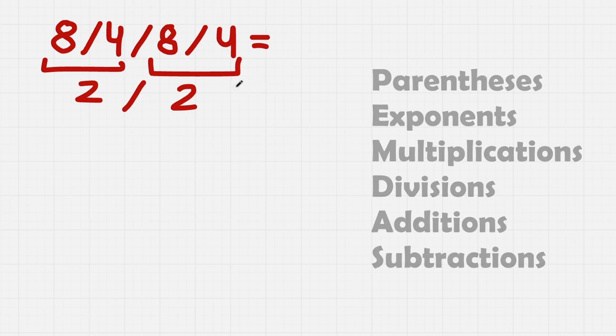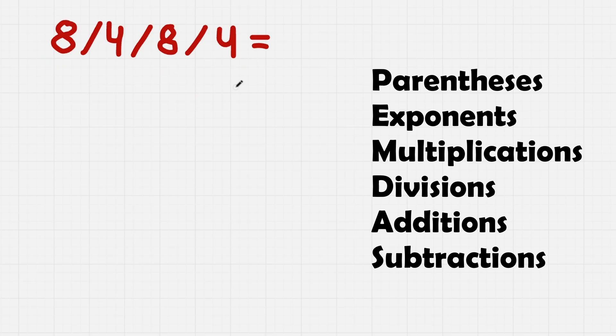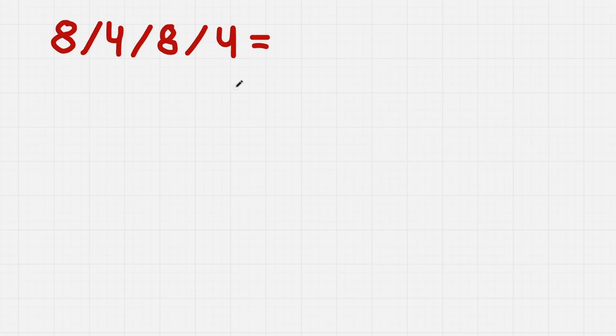And that is not correct according to the PEMDAS rule that says we need to do the left operations first if we only have one type of operation. In this case, we have divisions. So we need to do this first, this second, and this third. We cannot just do this, then jump to the third and do the second one afterwards.